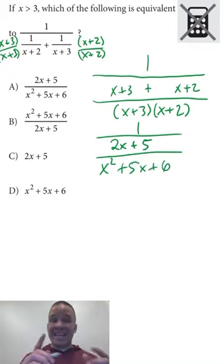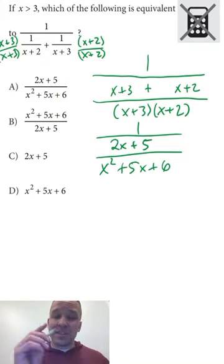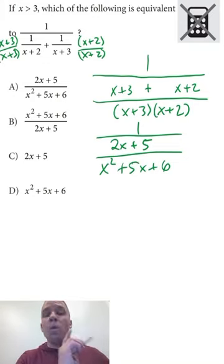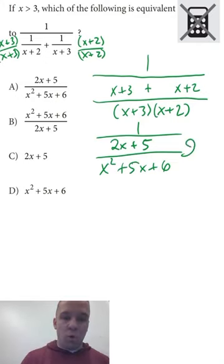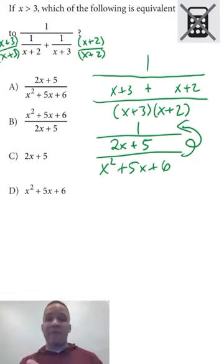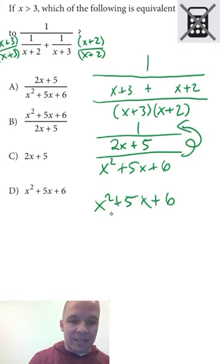And you might be looking at me like, hey man, I think the answer is A because I see this two X plus five divided by X squared plus five X plus six, and you'd be dead wrong. What we need to do is we're actually one divided by that. We need to get that reciprocal and multiply it by that one.